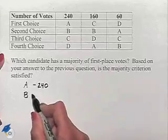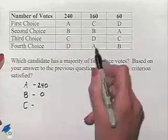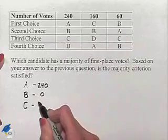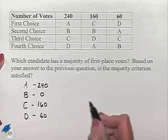Candidate B does not have any first place votes. Candidate C has 160 first place votes, and candidate D has 60 first place votes.